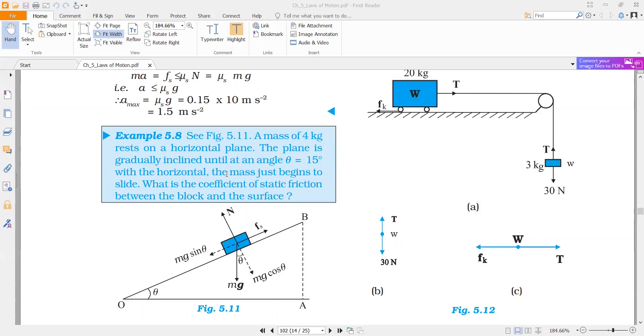We take LCM: this is root 3 minus 1 upon root 3 plus 1. Root 3 is 1.732, so 1.732 minus 1, 1.732 plus 1. So this is 0.732 upon 2.732.